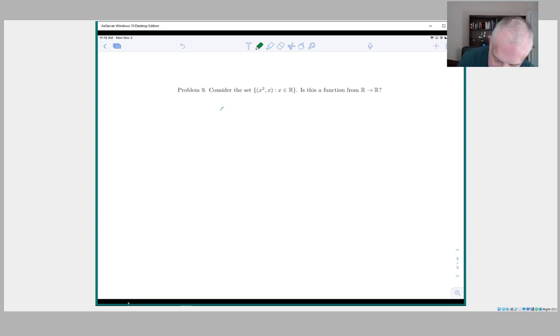I mean, this collection of pairs, x squared x, is a subset of R cross R. That is to say, it's a collection of points in the Cartesian plane. And what collection of points is it? It's the collection of points where x is equal to y squared.